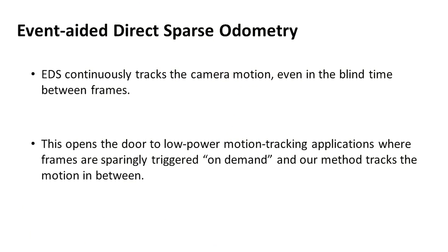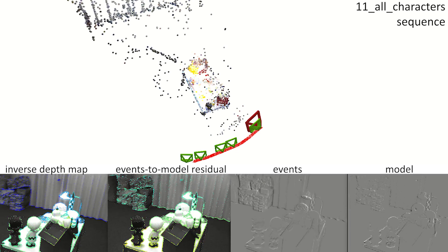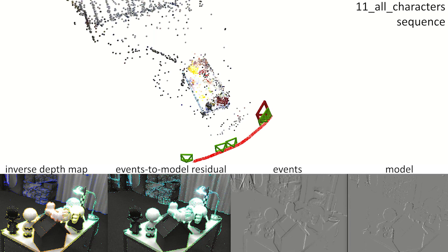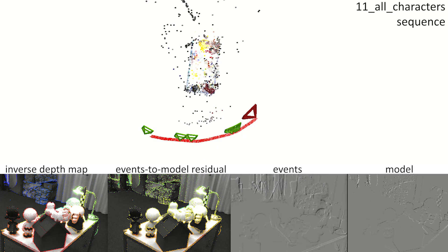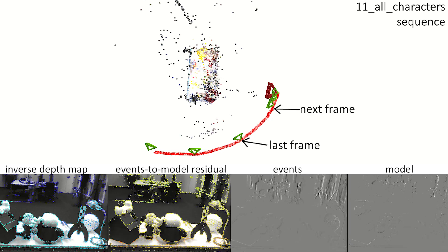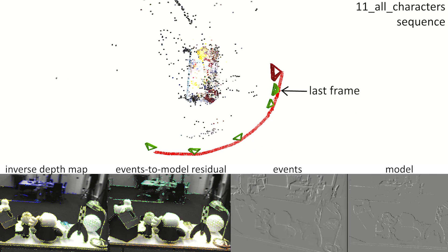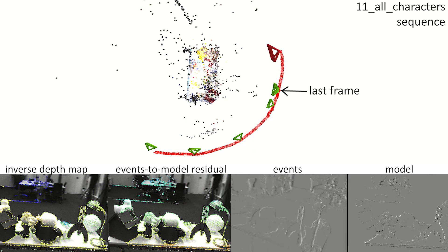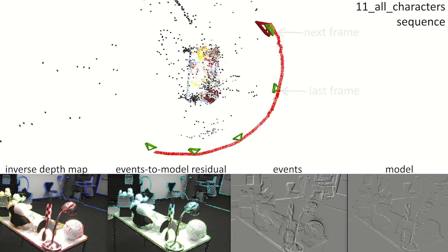EDS continuously tracks the camera motion even in the blind time between frames. This opens the door to low-power motion tracking applications where frames are triggered on demand, and our method tracks the motion in between. We trigger frames on demand in the following sequence: EDS can continuously track camera motion using only events. When a new frame is given, classical photometric optimization triangulates new points without losing tracking, thanks to the events.